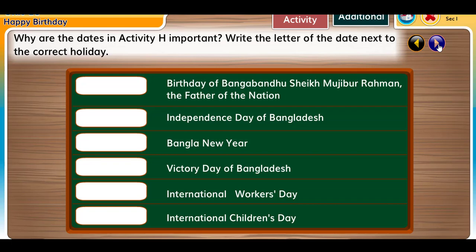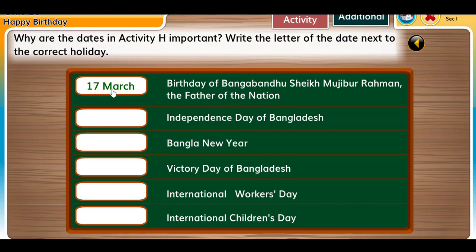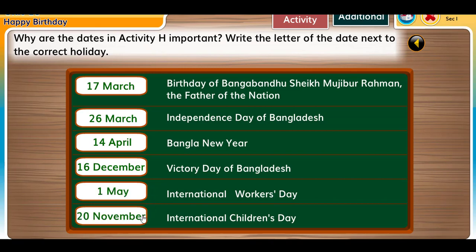Write the letter of the date next to the correct holiday. 17th March: Birthday of Bangabandhu Sheikh Mujibur Rahman, the Father of the Nation. 26th March: Independence Day of Bangladesh. 14th April: Bangla New Year. 16th December: Victory Day of Bangladesh. 1st May: International Workers' Day. 20th November: International Children's Day.